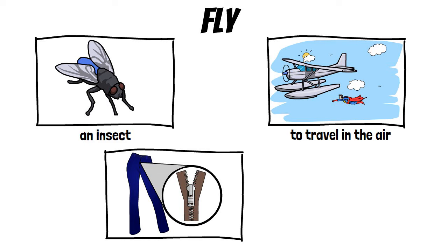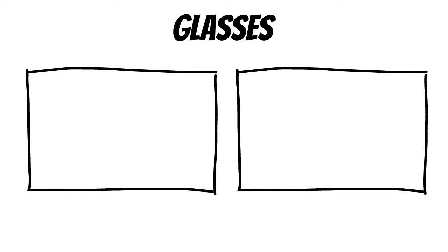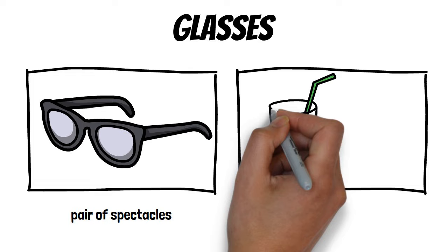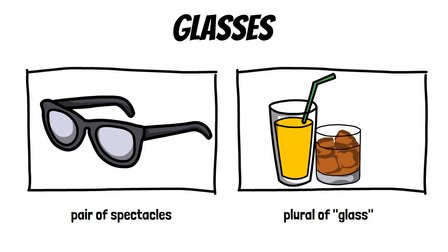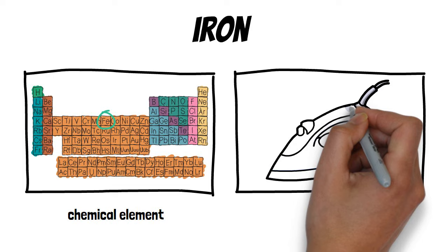Glasses: the first meaning is a pair of spectacles, and the second is the plural of glass. Iron: the first meaning is a chemical element, and the second is a tool that makes clothes flat.